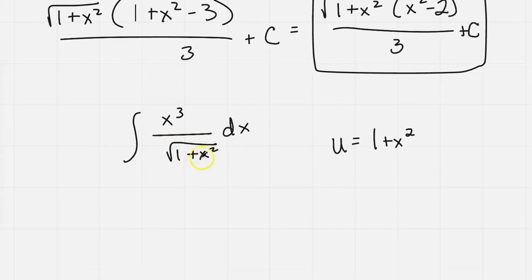The logic behind that u-sub is, everything under the square root, we want to make that the u. But if you make that the u, you're going to get a 2x as a derivative, and that only gets rid of one of your x's.